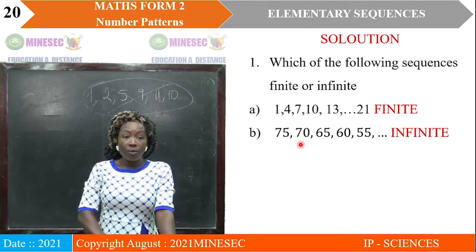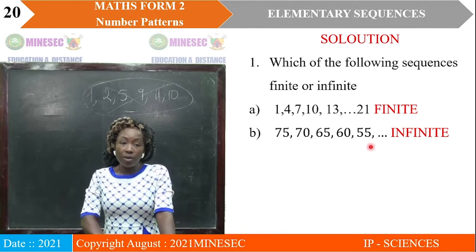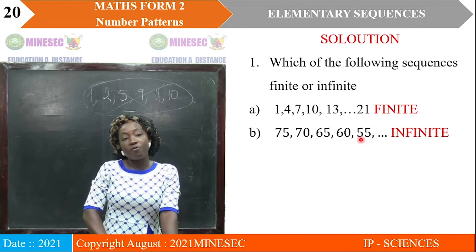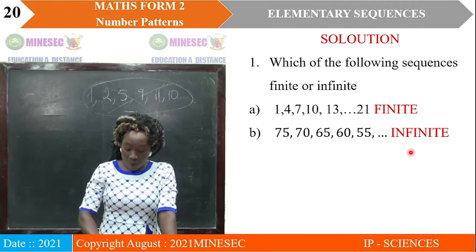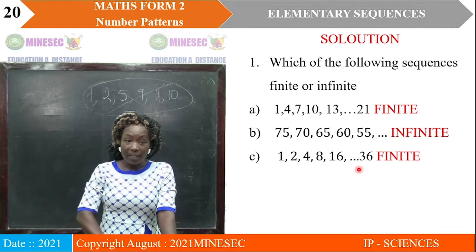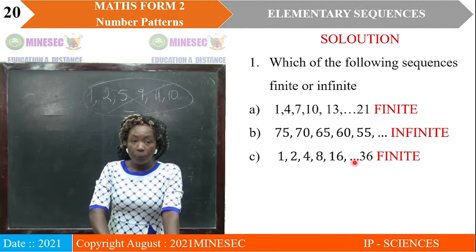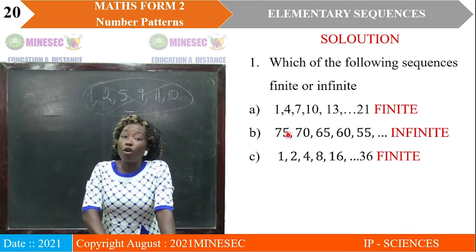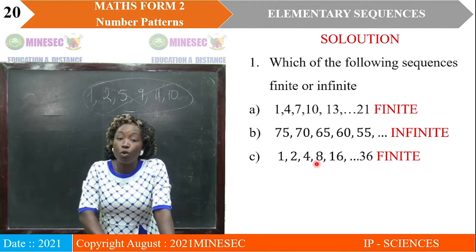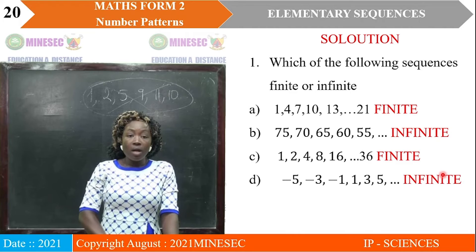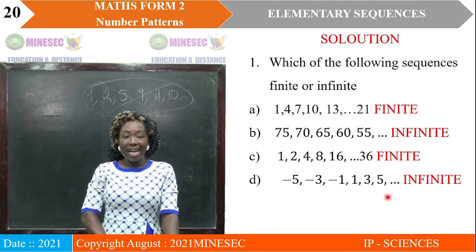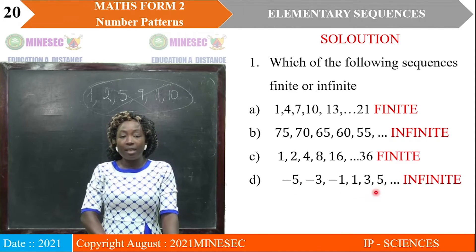Looking at the next sequence: 75, 70... it is decreasing. When you reach the term 55, there are three dots after 55 — those three dots show that the sequence is infinite. The next one, C, is similar to E and is therefore finite. Note that all these are valid sequences because there is a rule they follow to generate each term. The next sequence has negative 5, negative 3, negative 1... it doesn't end at 5 because there are three dots after 5, which means this sequence is infinite.